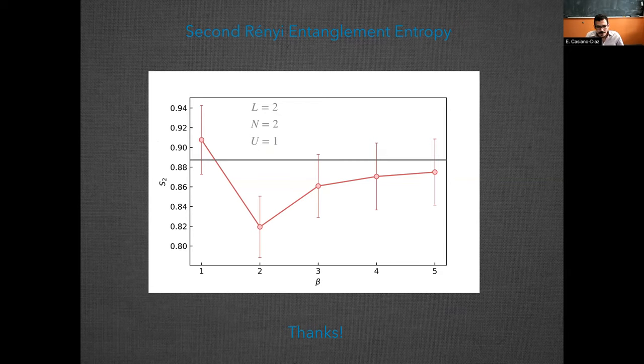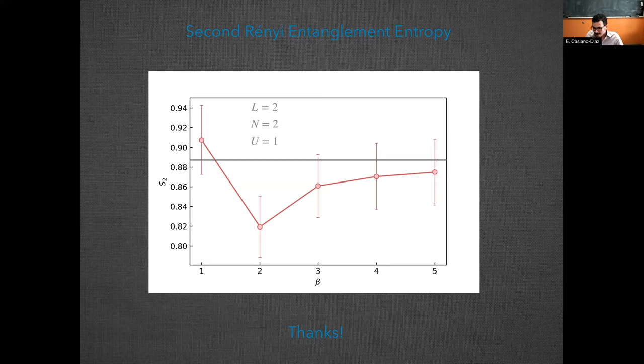So on our to-do list, what we'll be doing now is trying to optimize this code. Since it's working, presumably, we'll be trying to optimize it in such a way that we can now simulate larger systems that we could ever study with exact diagonalization. Thank you very much.